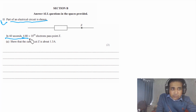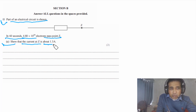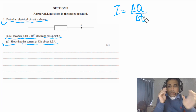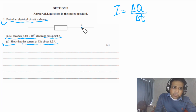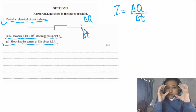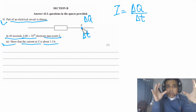Question 11 says: part of an electrical circuit is shown in the figure. In 60 seconds, 4.80 × 10²⁰ electrons pass point C. For part A, show that the current at C is about 1.3 amps. First, let's understand what current is. Current is simply equal to the total charge passing through a point divided by total time — because current is the rate of flow of charge.